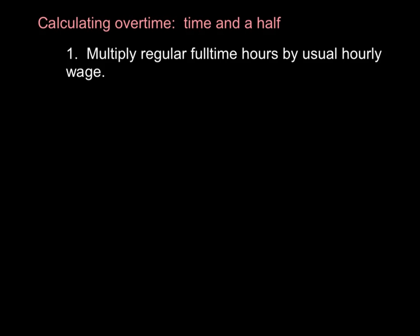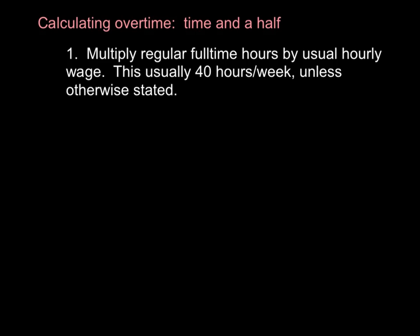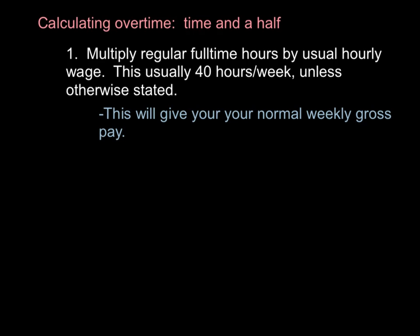First, multiply regular full-time hours by your usual hourly wage. This is usually 40 hours per week unless otherwise stated. This will give you your normal weekly gross pay.